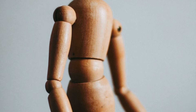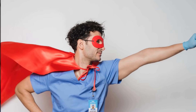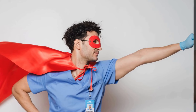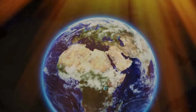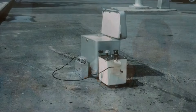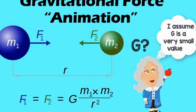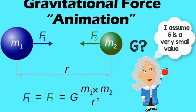At its core, gravity is the force that pulls objects with mass toward one another. It's what keeps us anchored to Earth and allows planets to orbit the sun. Imagine throwing a ball into the air — why does it come back down? Gravity is the answer: a force that pulls objects toward the center of the Earth.